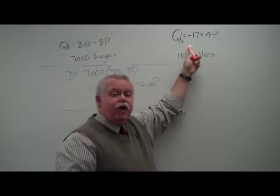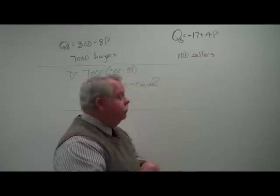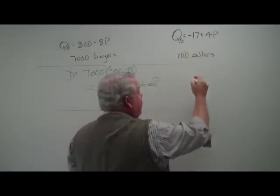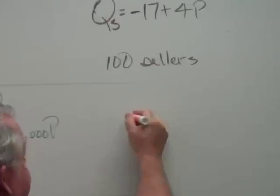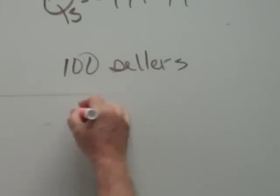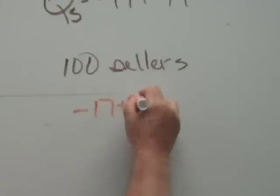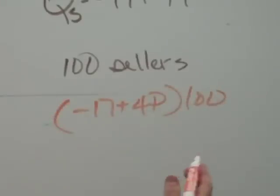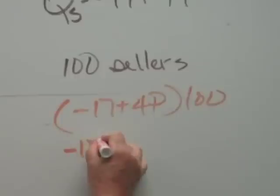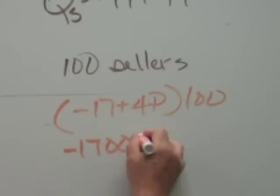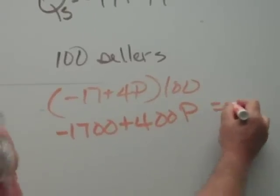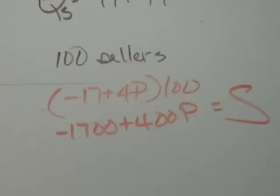As we survey this market, we find that there are 100 sellers, 100 competitors. So now we estimate the market supply function, 100 times this. The market supply is going to be negative 1,700 plus 400P. This is the market supply function.